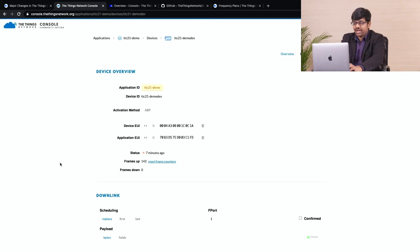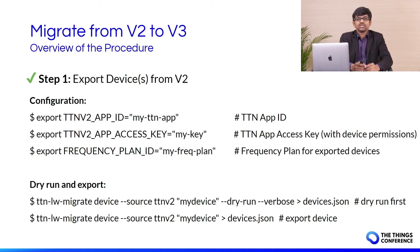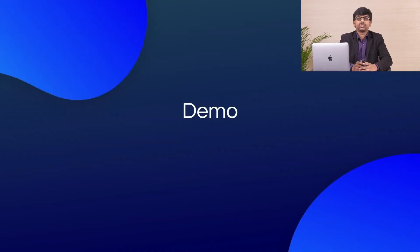Let's recap what we have done till now. You need to configure the migrate tool — provide the app ID, access key, and the frequency plan ID. Then you can start exporting the device details. Make sure you use the dry run flag before you export the details. The next step is to import the device in V3.